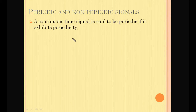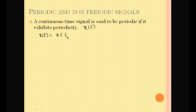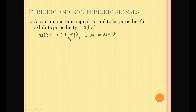A continuous time signal is said to be periodic if it exhibits periodicity. Mathematically, say we have a signal x(t). Then it is called a periodic signal if it satisfies the condition x(t) = x(t + T), where T is a positive constant, and the smallest value for which this condition is satisfied is called the fundamental period, represented as T₀.